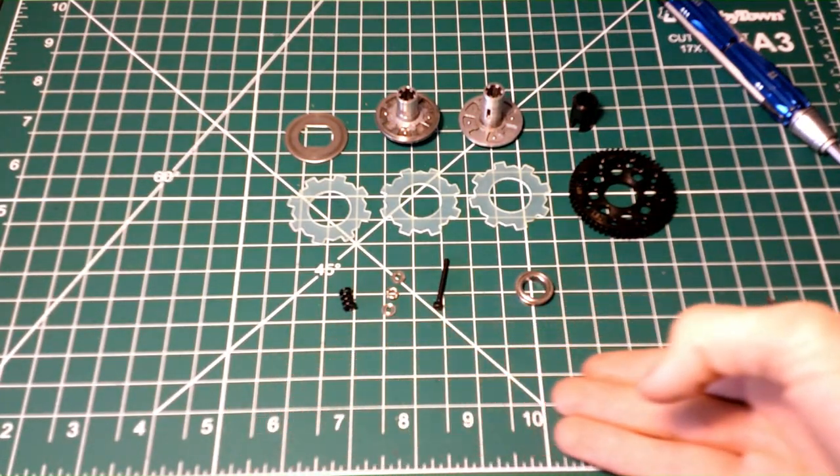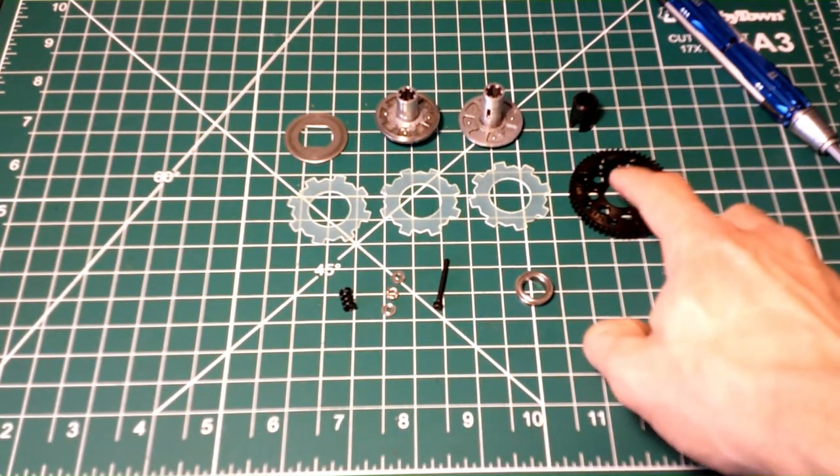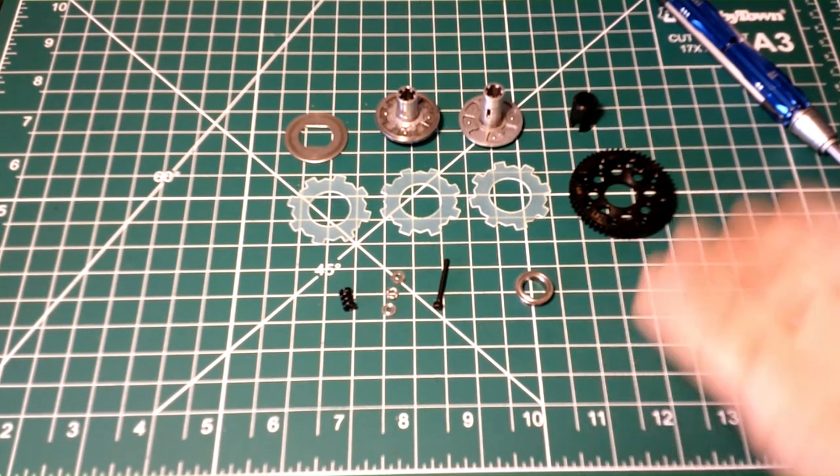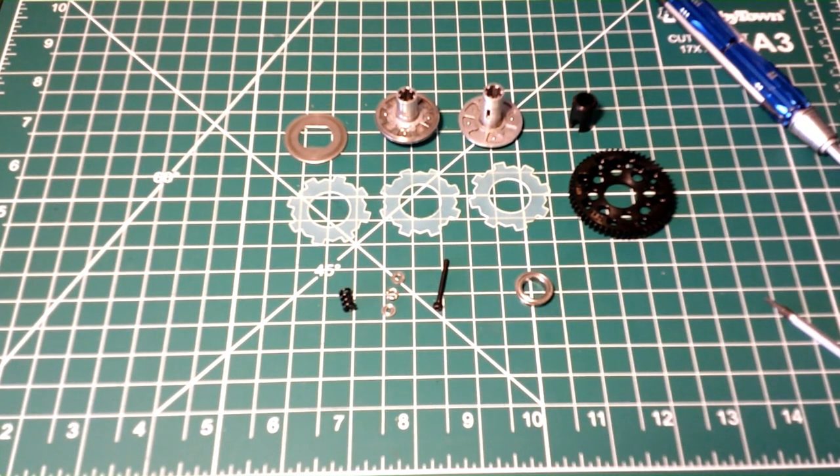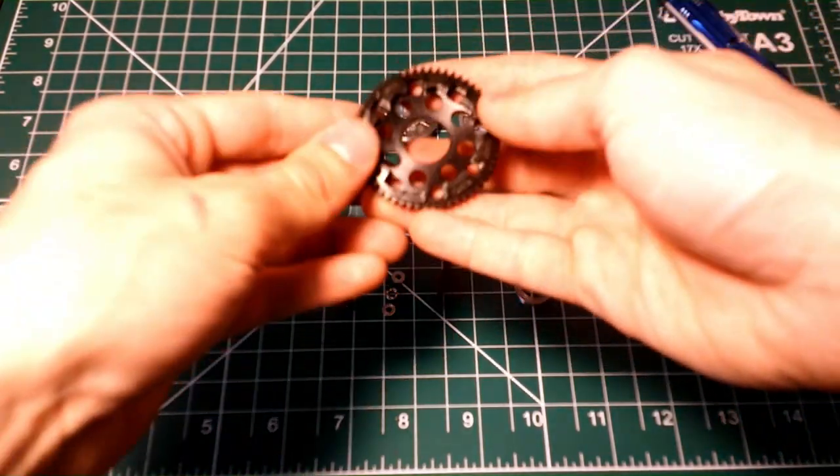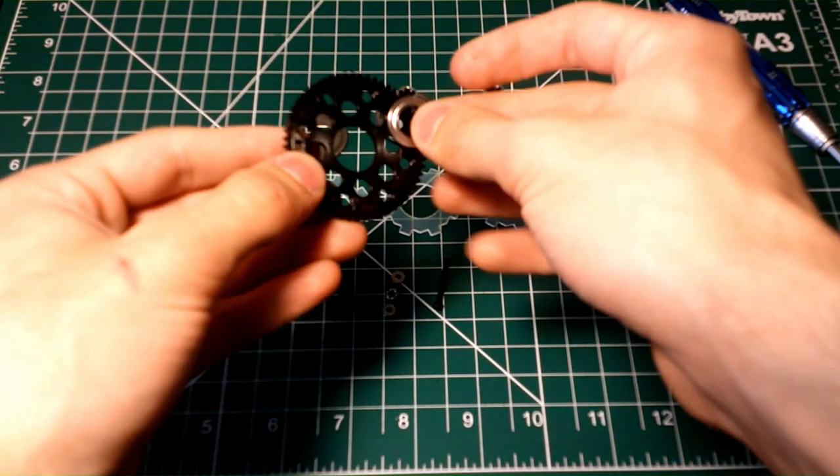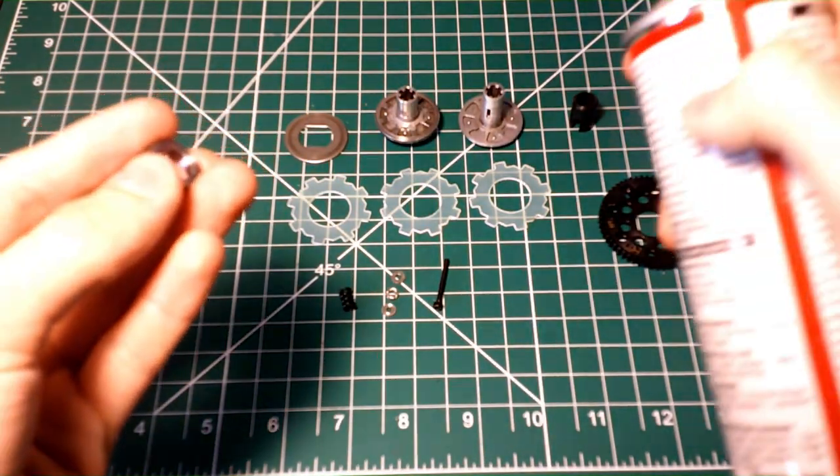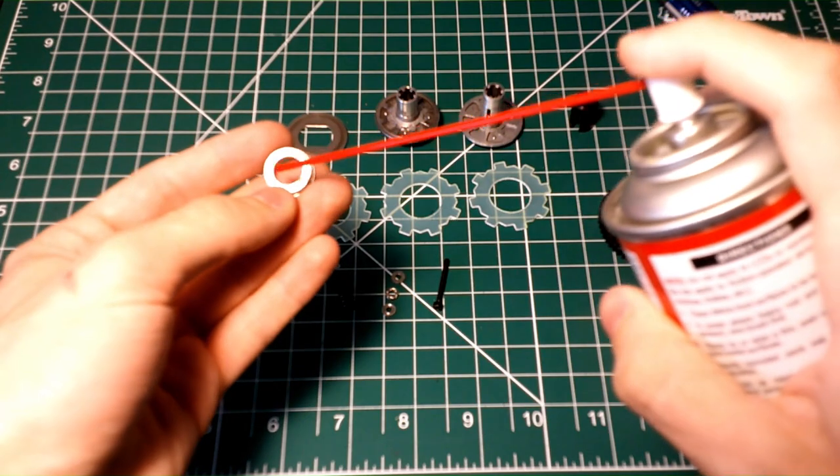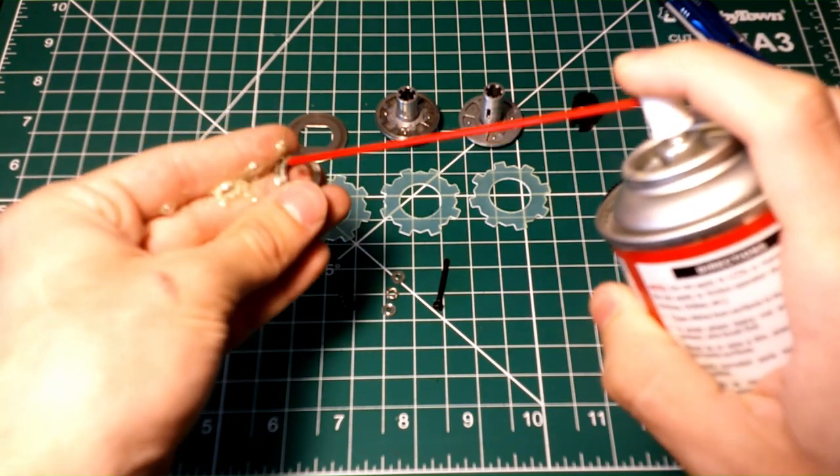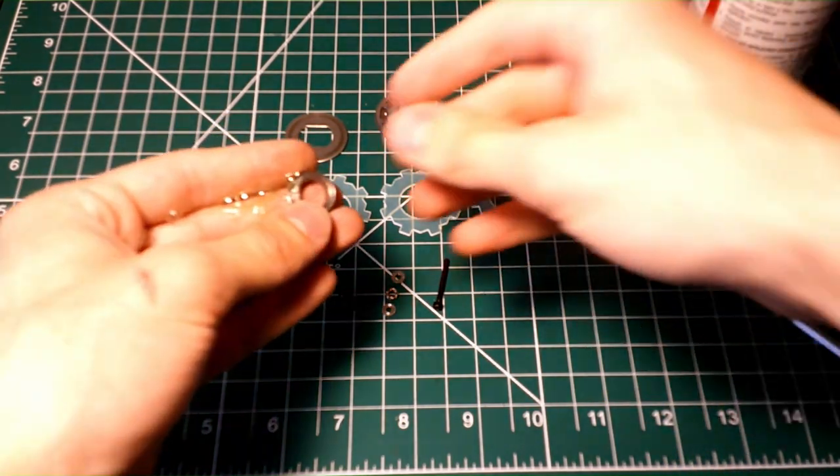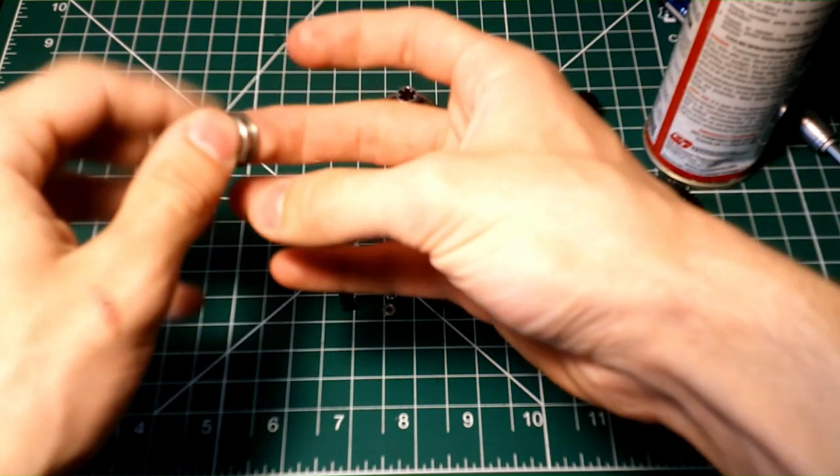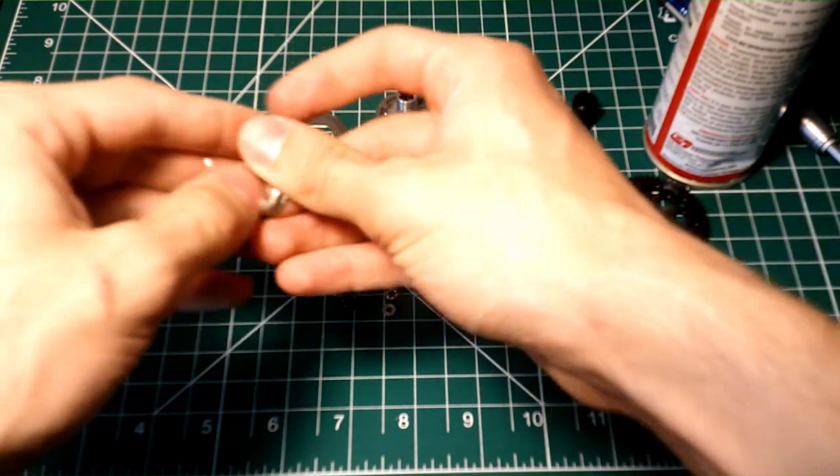Alright, so here we have all the new parts for the slipper clutch, including hot racing steel spur gear. Again, you don't have to use the hot racing one, you can just use the Arma steel if you want to. So we're going to start by putting the bearing into this spur gear here. And since I'm using the old bearing here, I've got some bearing lubricant I'm going to spray in there. Make sure you use plenty. And this is going to help prolong the life of the bearing, keep it running smoothly.